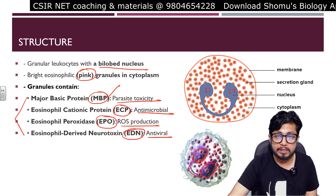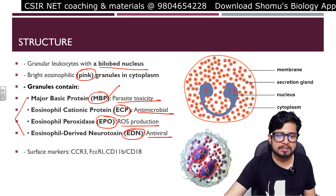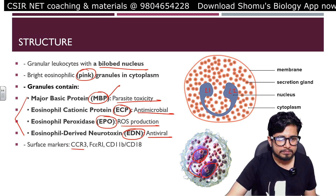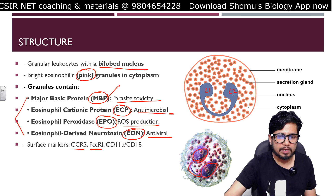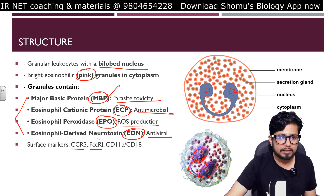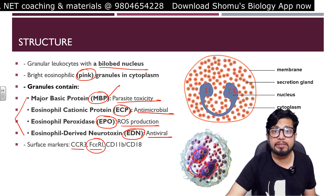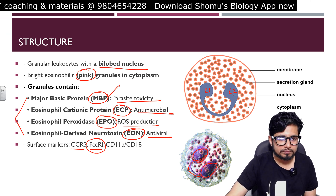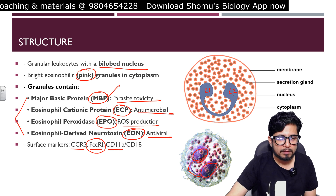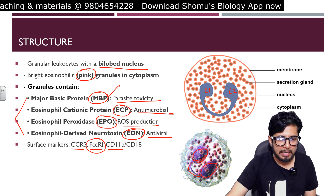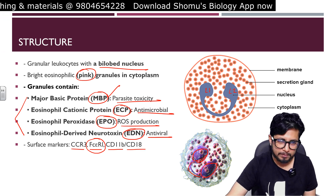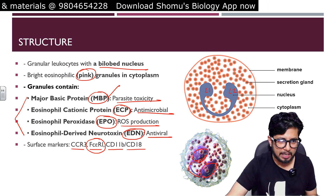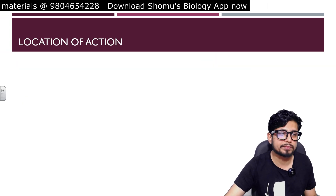There are also surface markers on eosinophils: CCR3, FcεRI receptor for the activation of IgE-mediated allergic response, CD11B, and CD18. CCR3, CD11B, and CD18 are the surface markers of eosinophils.